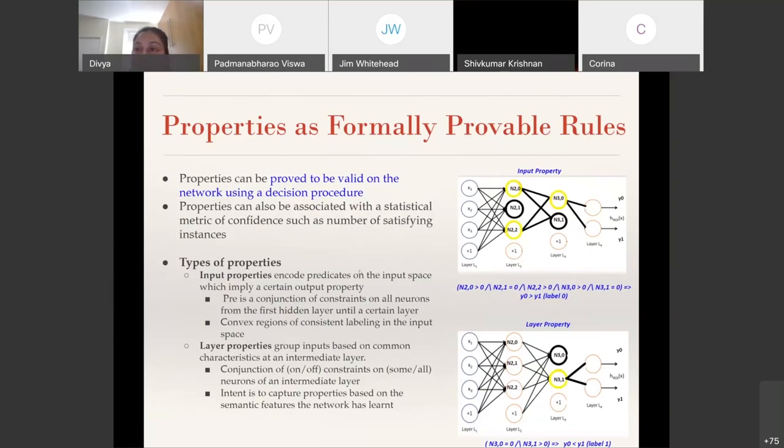Such input properties trace convex regions of consistent labeling in the input space or represent inputs that are close to each other in the input space and on which the network can be proved to behave similarly. The other type of properties we extract are called layer properties, which group inputs based on some common characteristics at an intermediate layer. These are conjunction of on-off constraints on some or all of the neurons at an intermediate layer. For example, these could be constraints on just the neurons of the third layer which imply that if n30 is off and n31 is on, then the output of the network is always going to be label one. The intent here is to capture properties based on semantic features that the network might have learned. These are inputs which are not close to each other in the input space or don't look very much like each other, but they share a common feature which the network might have learned and uses to classify them.